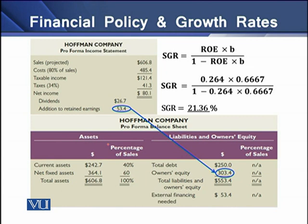On the screen, you can see a projected income statement and balance sheet grown at 20%. For the sustainable growth rate, two variables are used: ROE and B, where ROE stands for return on equity and B means retention or addition to retained earnings. The calculated sustainable growth rate is 21.36%, meaning a firm without equity financing can grow annually at 21.36%. Using this rate, additional retained earnings are $53.4.